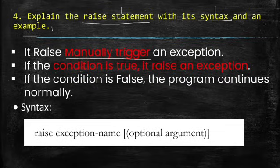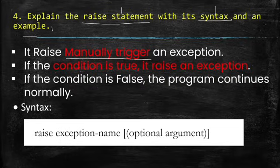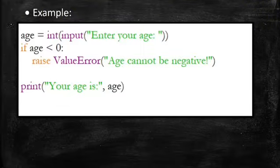And what is the syntax here? Raise, exception name, and in the bracket, optional argument. And what is the example you can give? Age equals int of input 'Enter your age'. If age is less than 0, for example, I have given here minus 5. So enter the age, I am giving here minus 2.